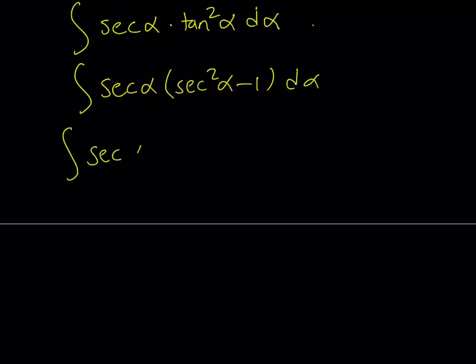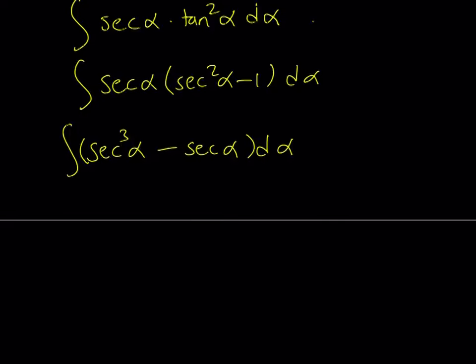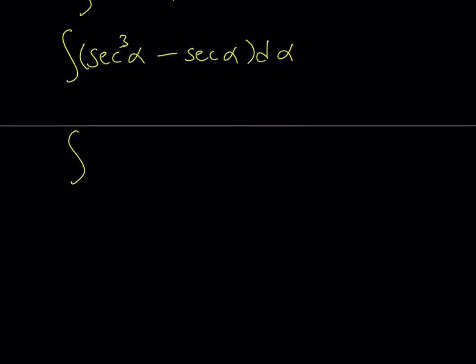This is going to give us secant alpha to the third power — because we're going to multiply the first and second powers — minus secant alpha, multiplied by d alpha. Now let's go ahead and separate these two integrals.